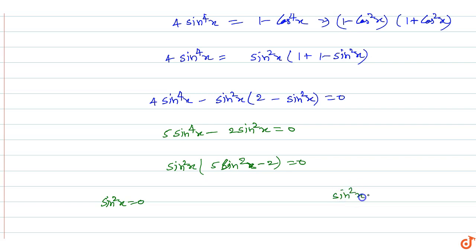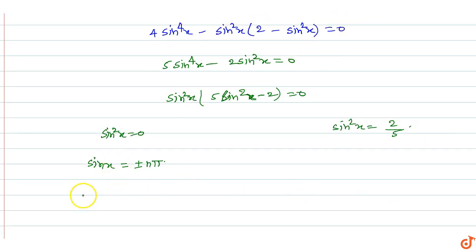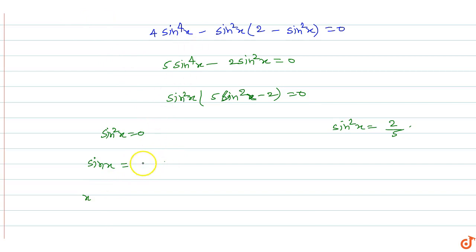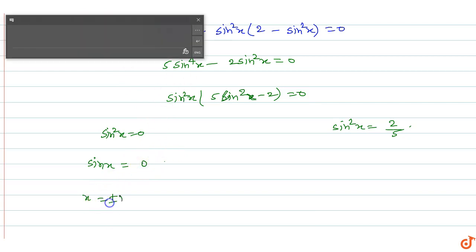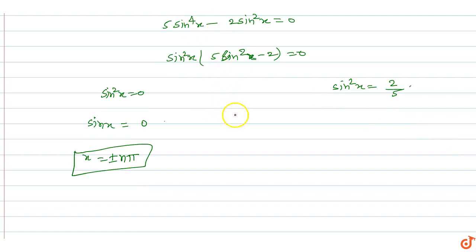From sin²x = 0, we get sin x = 0, giving x = ±nπ. From the other factor, sin²x = 2/5. For the case sin²x = 0, sin²x is always equal to 0, and x equals ±nπ.